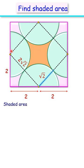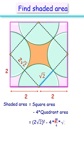The shaded area is area of square minus 4 times the area of quadrants. Area of square is 2 root 2 square and 4 times quadrant area is this.